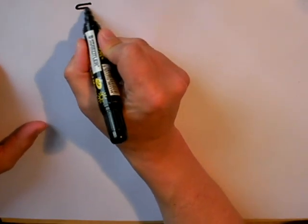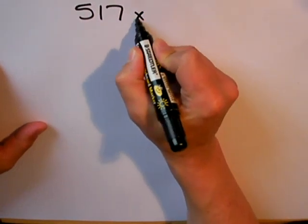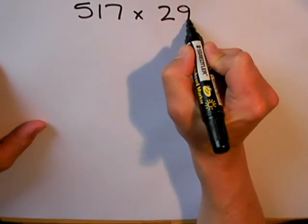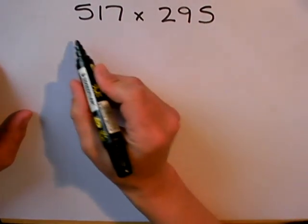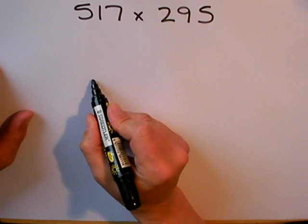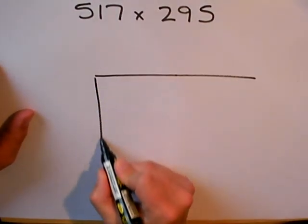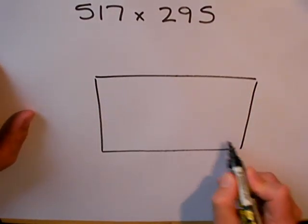The final example I'm going to work through is a three-digit number, 517, multiplied by another three-digit number, 295. Because it's a three-digit by a three-digit number, I'm going to need a grid that has enough room for three digits by three digits.